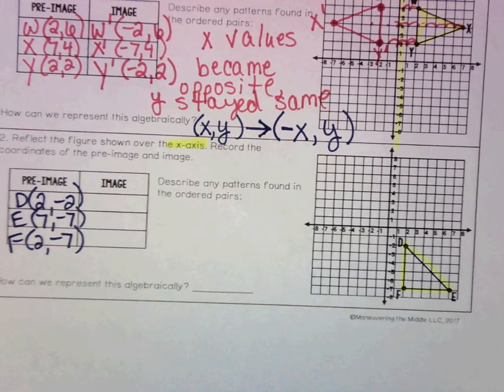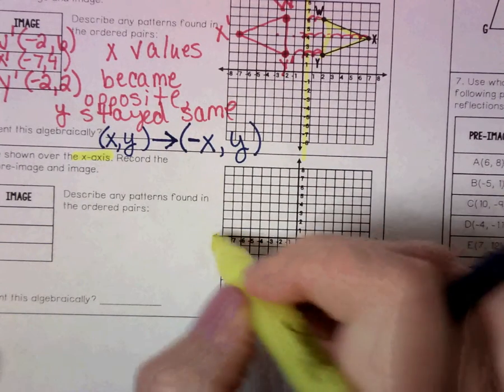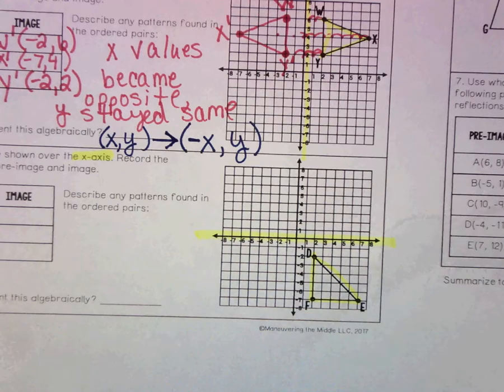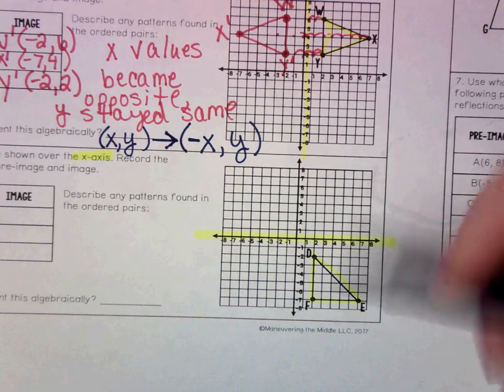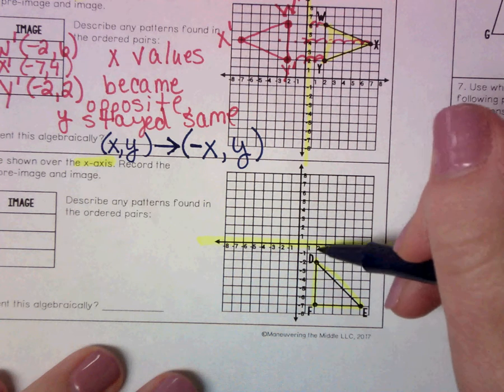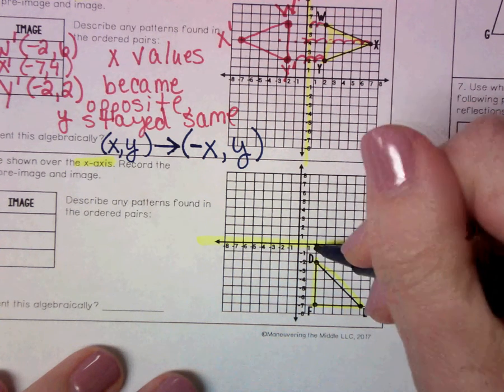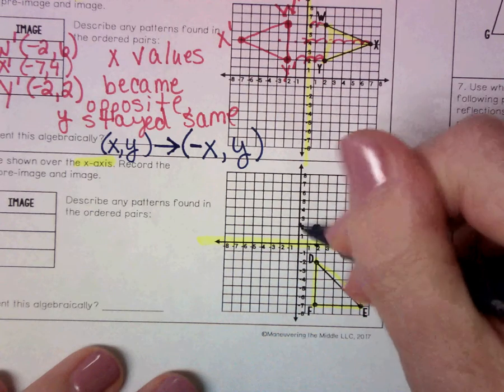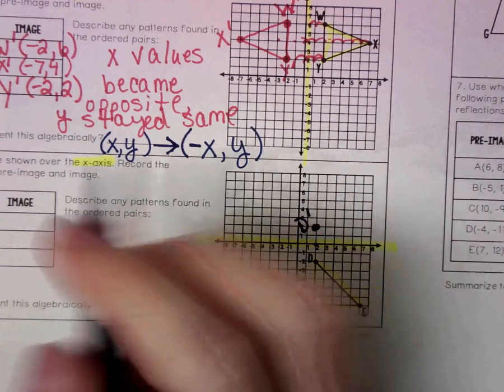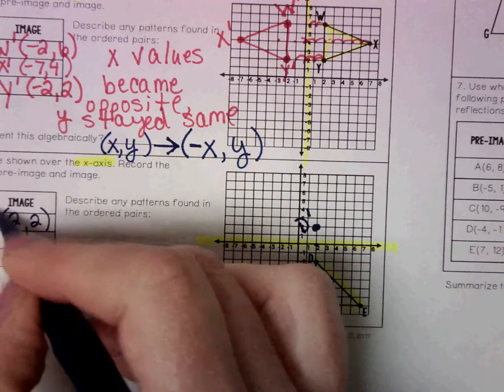It wants us to reflect it over the x-axis. So this time we're reflecting it over the x. We're going to count how many units. D is 1, 2 units away, so now I'm going to go 2 units the other way: 1, 2. And so d prime is at (2, 2).